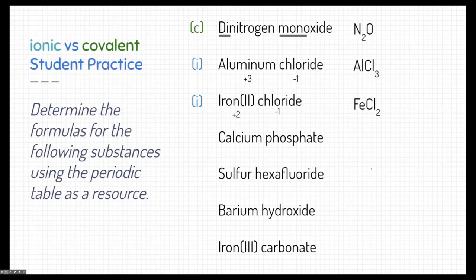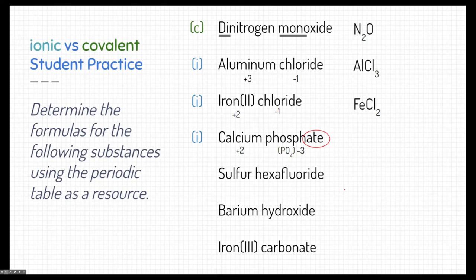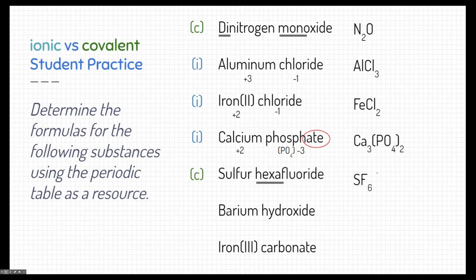Calcium phosphate: calcium is a metal, and phosphate is a polyatomic ion — the '-ate' ending gave it away. Phosphate is found on the periodic table as PO4 with a charge of minus 3. Calcium is plus 2, so to cancel out we need three calciums for a total charge of positive 6, and two phosphates for a total charge of negative 6. The formula is Ca3(PO4)2. Sulfur hexafluoride is a covalent compound — sulfur and fluorine are both non-metals. Sulfur has one, and hexa means six fluorines, so the formula is SF6.